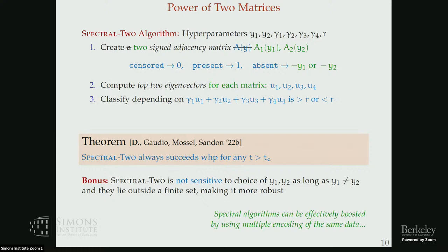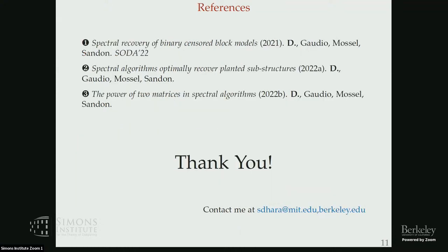There is also a bonus: the Spectral-2 algorithm class is not very sensitive to the choice of encoding matrices. As long as the encoding parameters are not equal and lie outside a finite set, it always works — making spectral algorithms quite robust. The takeaway is that spectral algorithms can be effectively boosted by using multiple encoding matrices on the same data. I'd be happy to chat about open questions and intuitions offline. Thank you.